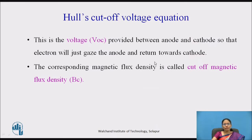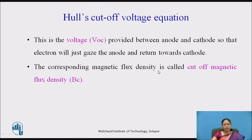Hull's cutoff voltage equation concerns the voltage VOC and the magnetic flux density needed to produce oscillations. VOC is the voltage provided between anode and cathode such that the electron will just graze the anode and return towards the cathode. The corresponding magnetic flux density is called the cutoff magnetic flux density, BC.